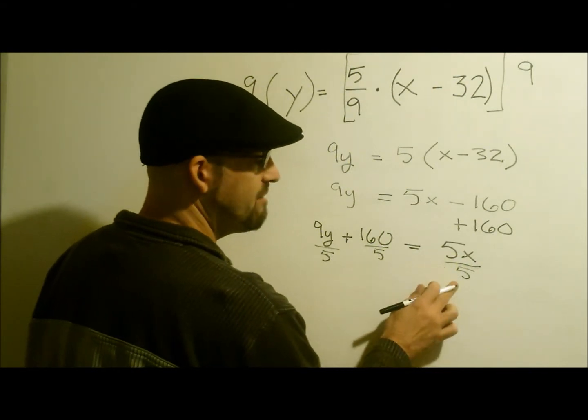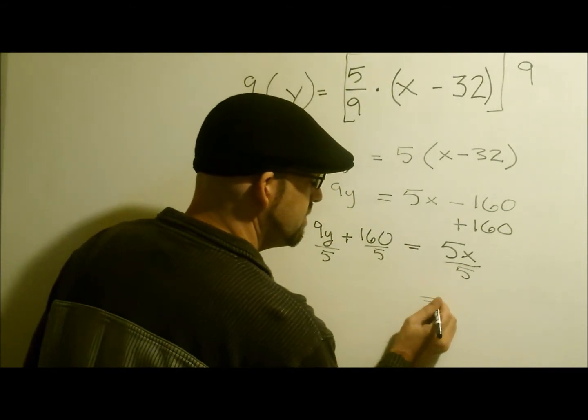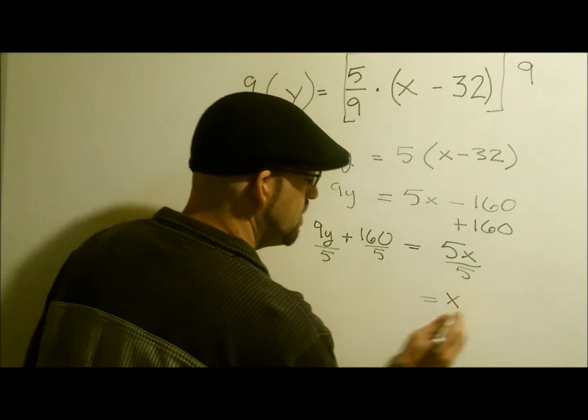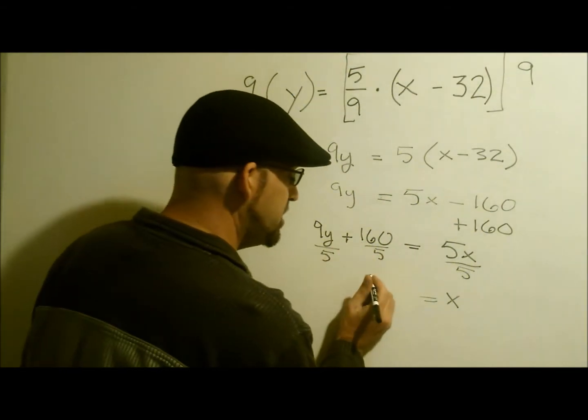5 divided by 5 is 1. So we have 1x. 160 divided by 5, well, that's just 32.